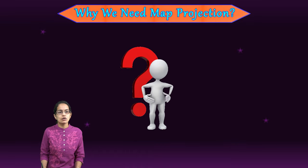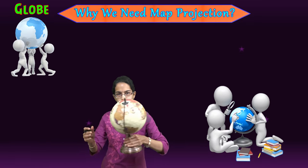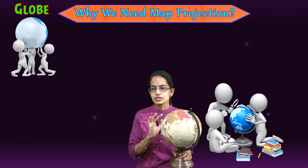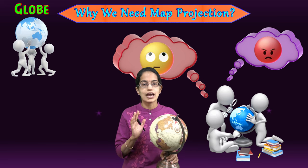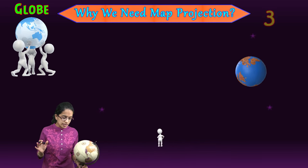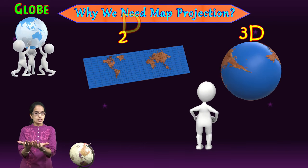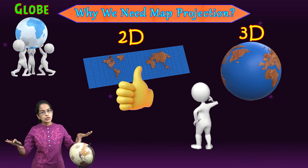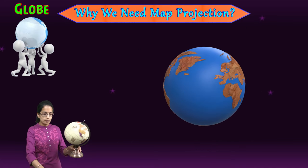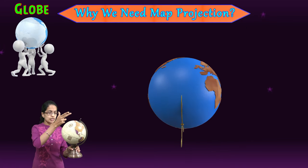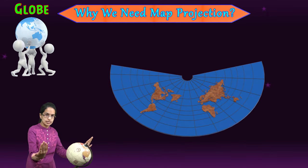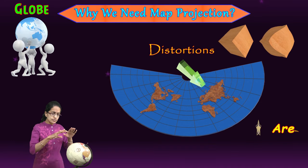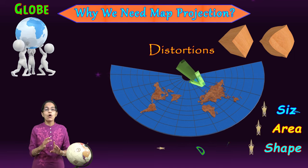We have always seen representation of earth through a globe. This globe is able to represent the surface of the earth, but it has certain issues. Therefore, we prefer a two-dimensional view. When we require a two-dimensional view, this three-dimensional globe is being cut — and when cutting and opening it up, there are distortions. These distortions can be in area, shape, size, or direction.